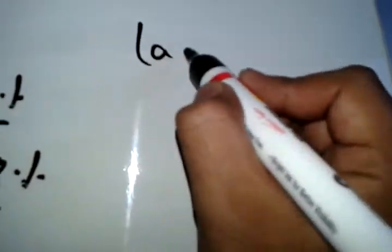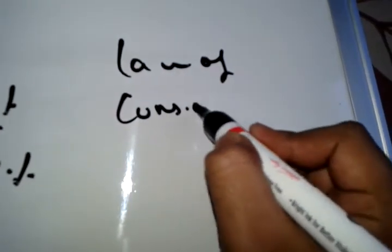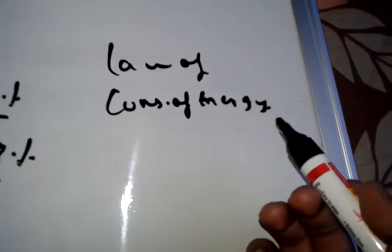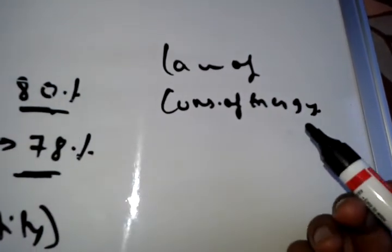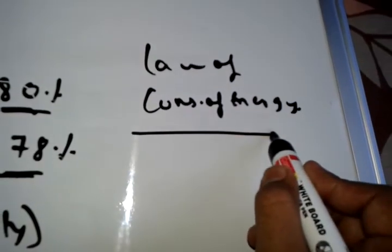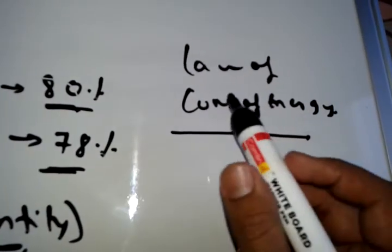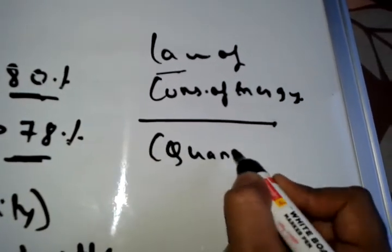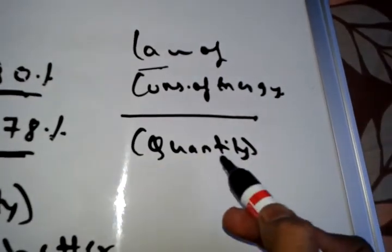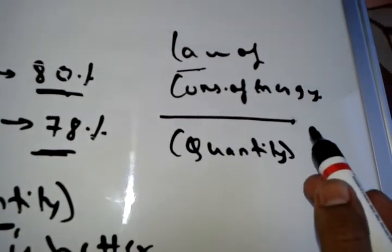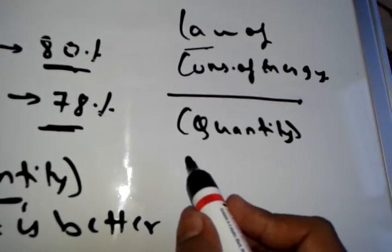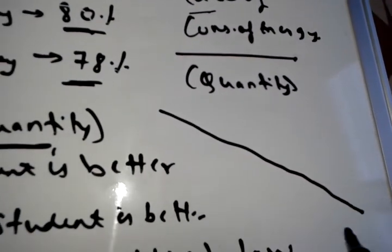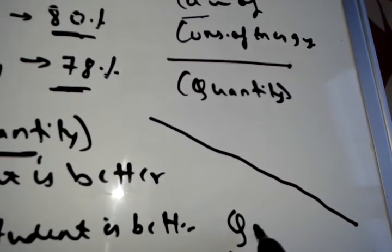If you have studied the law of conservation of energy, it states that energy cannot be created nor destroyed. So why worry about energy if it remains constant? The energy is constant in terms of quantity, yes, but in terms of quality, for whatever things we do every day, the quality of energy is continuously degrading. So the second law is very important.